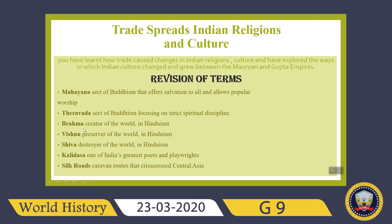For Indian sects, we covered Brahma — Hindus believe he was the creator of the world, since they believe in many gods. Vishnu is a god that preserves the world, and Shiva is the god Hindus believe will destroy the world. Kalidasa was one of India's greatest poets and playwrights. The Silk Road refers to trade routes that crisscrossed Central Asia.